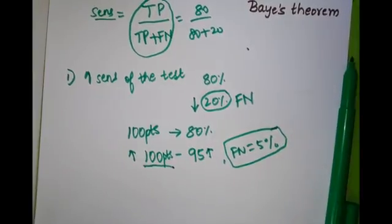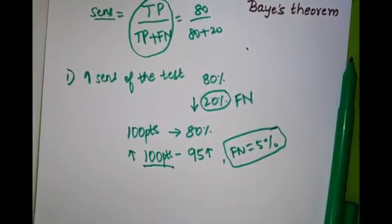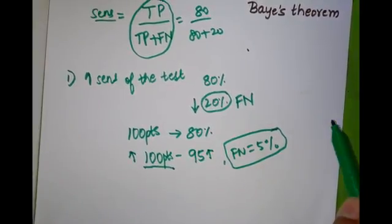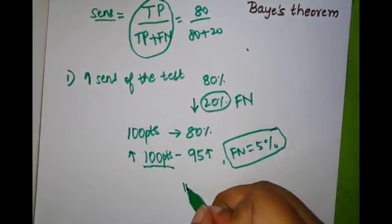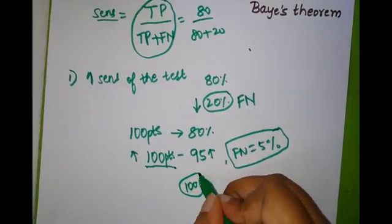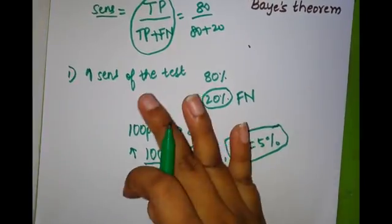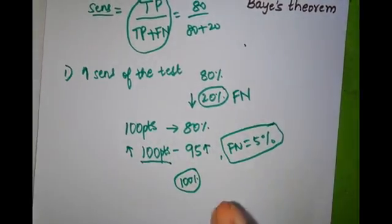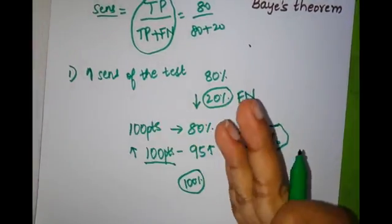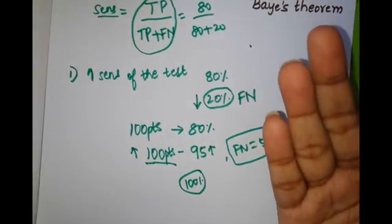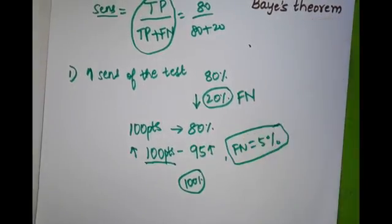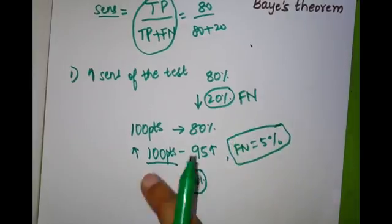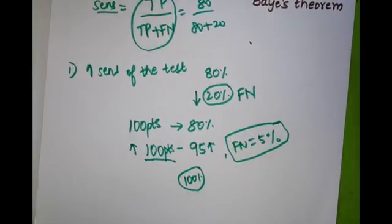When sensitivity increases, the first result is a reduction in false negatives. You don't want to increase sensitivity beyond 100 percent, and in clinical scenarios we try our best not to cause false positives. Please be very careful regarding this MCQ — most of us tend to get this wrong.